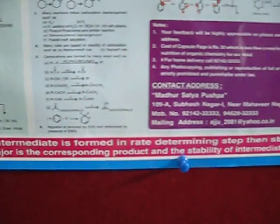And at last, I have added my rules, that is Ajneesh rule. During any organic reaction, if an intermediate is formed in rate determining step, then stability of intermediate will decide the formation of major product. Greater is the stability of intermediate, major is the corresponding product. And stability of intermediate is generally decided by resonance, hyperconjugation, and inductive effects.